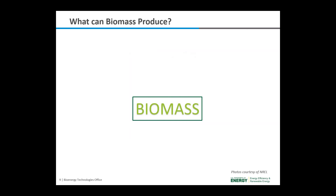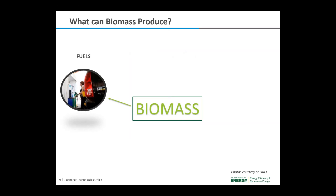Besides fuels, biomass can also produce electricity, products such as plastics and cleaning agents, chemicals, and heat and steam. Fuels produced by biomass include ethanol, biodiesel, and renewable diesel. Ethanol is an alcohol made by fermenting the sugar components of biomass. Ethanol is now used as a fuel additive for cars at a 10% blend, further reducing the need for oil imports. It is also blended in gasoline to increase octane and improve vehicle emissions.